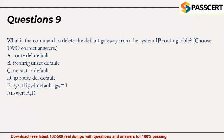Question 9. What is the command to delete the default gateway from the system IP routing table? Choose two correct answers. A. route del default. B. ifconfig unset default. C. netstat -R default. D. ip route del default. E. sysctl ipv4.default_gw=0. Answer: A, D.